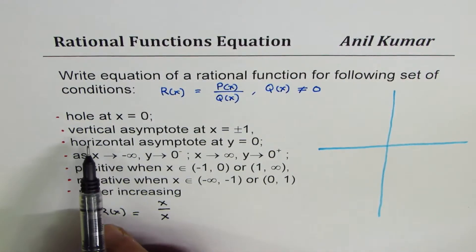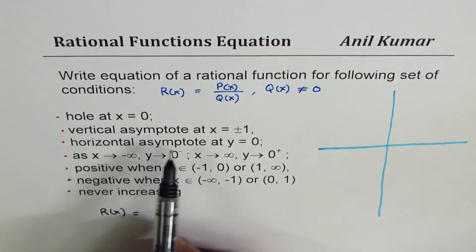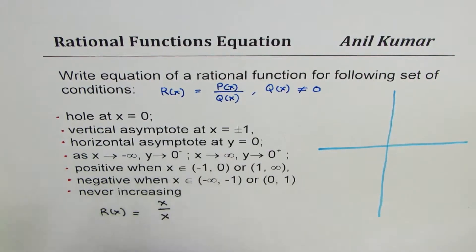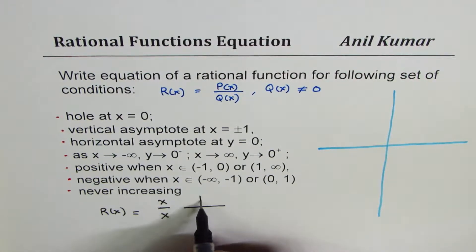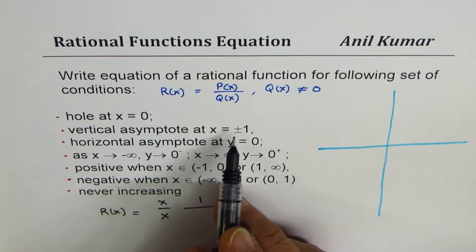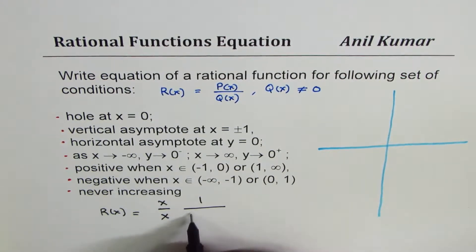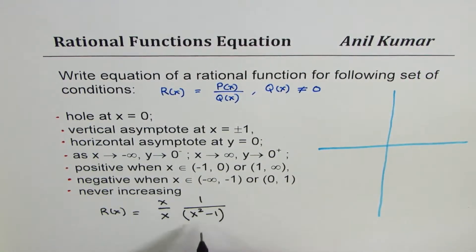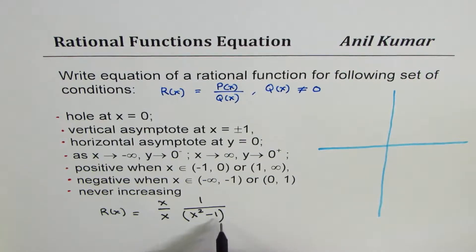The second condition is vertical asymptotes at x equals ±1. That means the denominator should be 0 at ±1, so we write x²−1 as a factor, or equivalently (x+1)(x−1) — same thing.